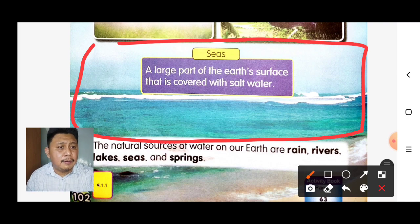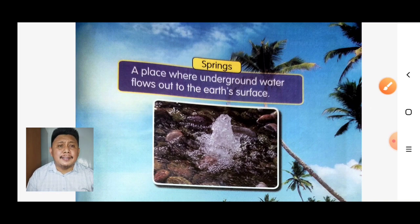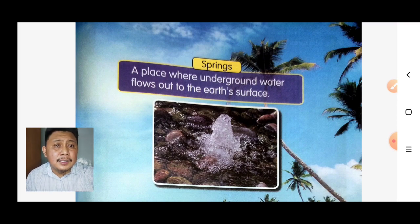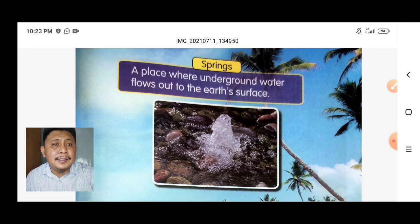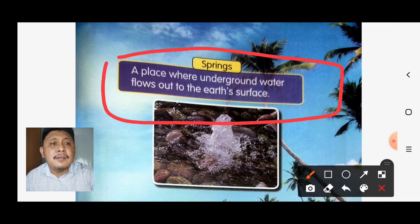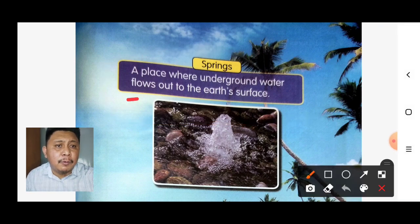Number four: springs. What is a spring? A spring is a place where underground water flows out to the earth's surface. Here is an example of a spring.